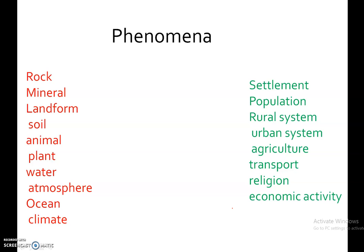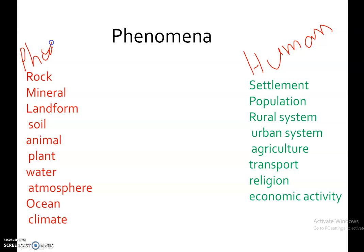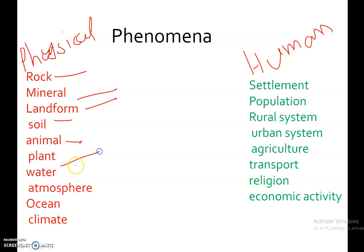Here are some of the phenomena studied in Physical and Human Geography. Red color shows the physical phenomena and green color shows the human phenomena. Physical phenomena include rock, mineral, landform, soil, animal, plant, water, atmosphere, ocean, and climate.